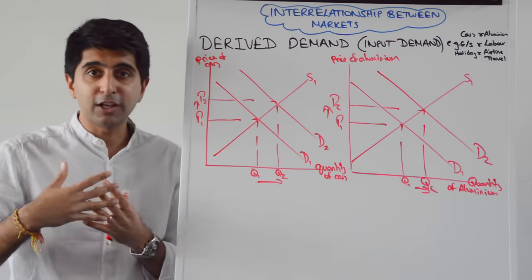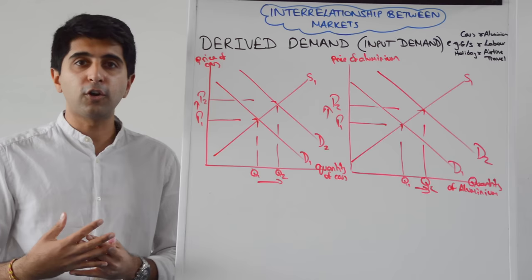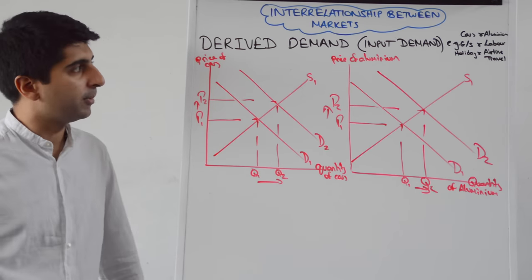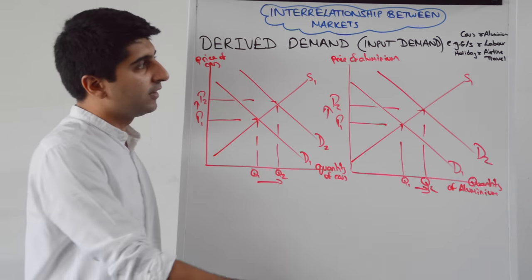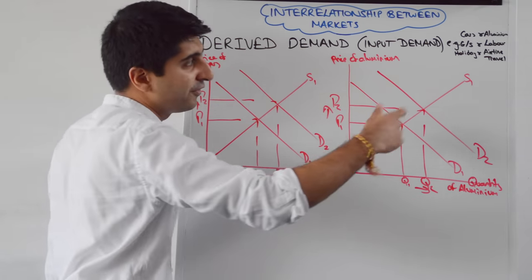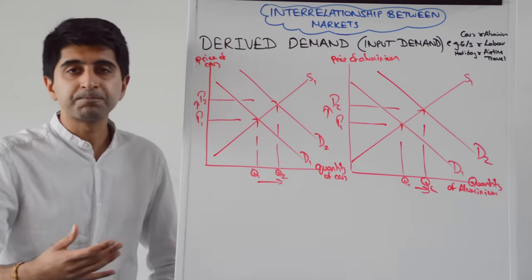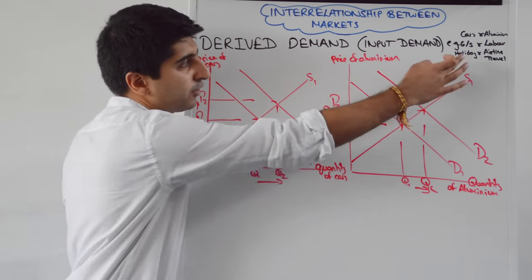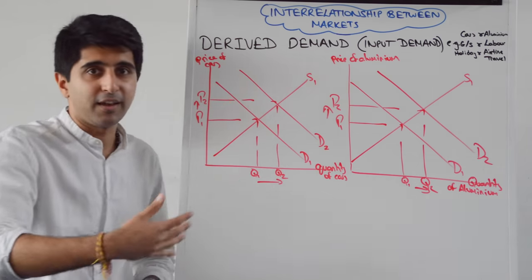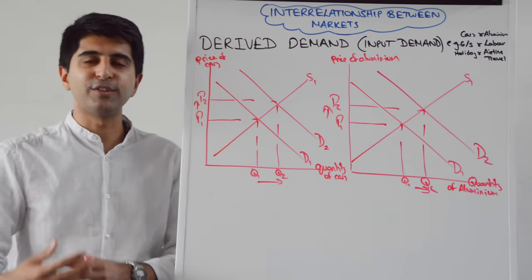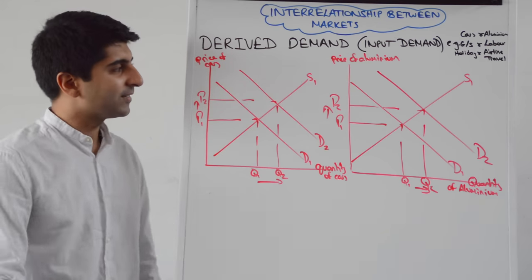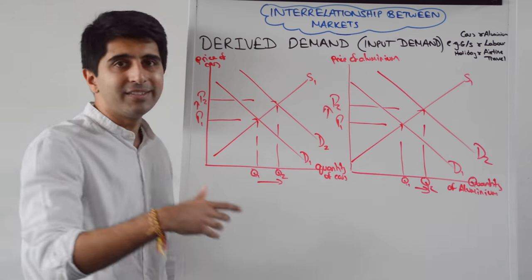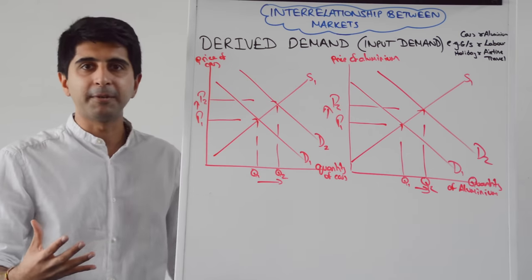For example, when there is economic growth in the economy, demand for labour will increase, reducing unemployment. When there is an increase in the demand for foreign holidays, there will be an increase in the demand for airline travel which is necessary to supply those foreign holidays. That's the idea of derived demand — think of it as input demand.